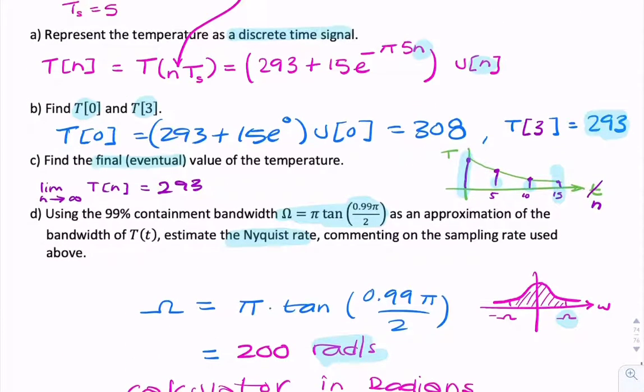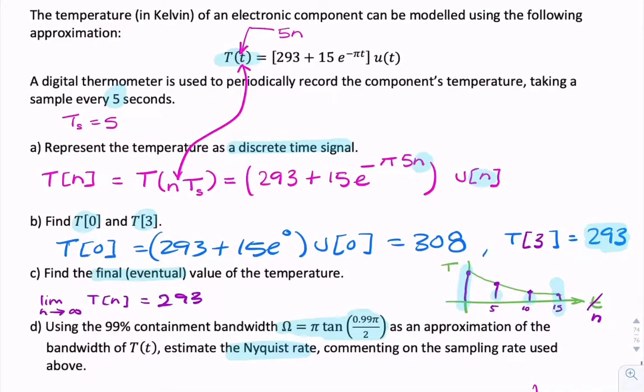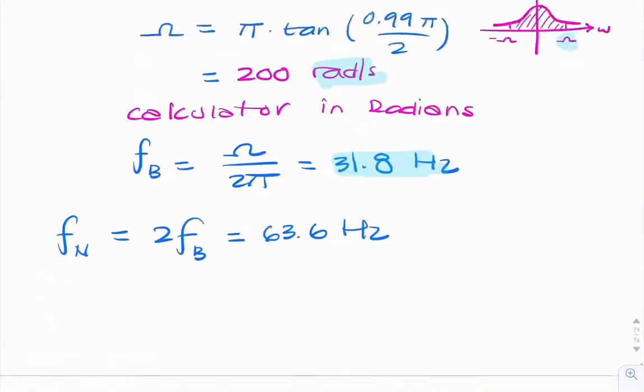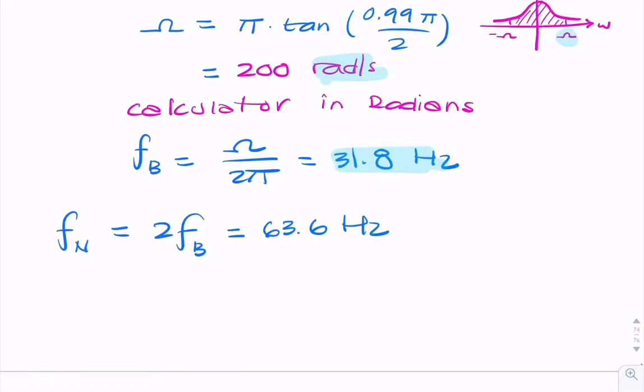And it says comment on the sample rate used above. Well, the sample rate used above was 5 seconds. So if we were to find the Nyquist period here, that's 1 over the Nyquist rate, 1 over 63.6 is 0.1. No, it's 0.016 seconds, which is much less than 5 seconds used in the question.